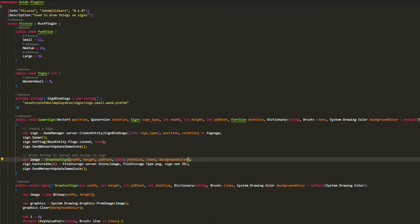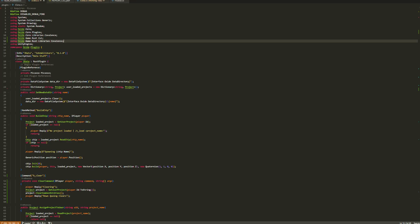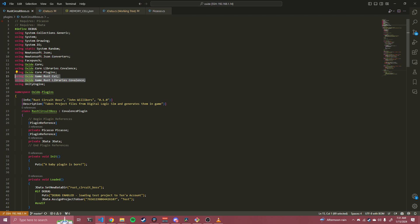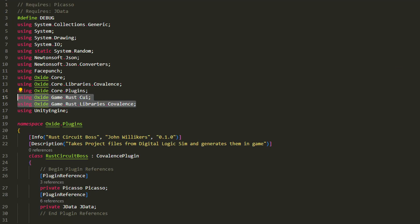I took all my logic for making signs and made another plugin called Picasso and moved all my logic for interacting with projects and chips to a plugin called JData. This is the only way you can code split in Oxide. You use a special compiler magic sauce thing to show that you require that plugin, then you use a macro called pluginReference to signify a property on your parent plugin as an instance of that child plugin.